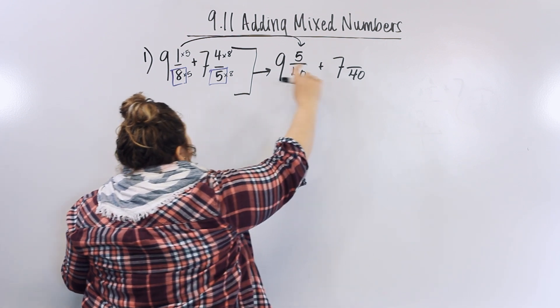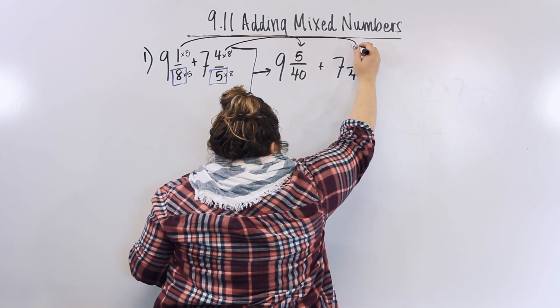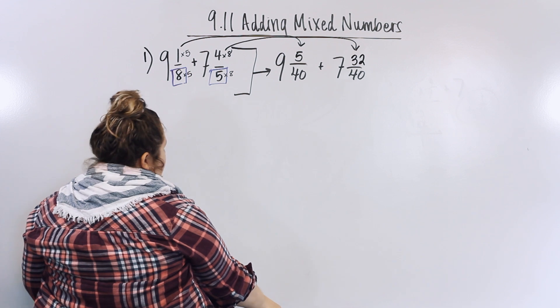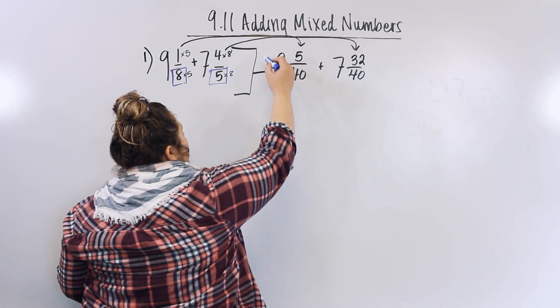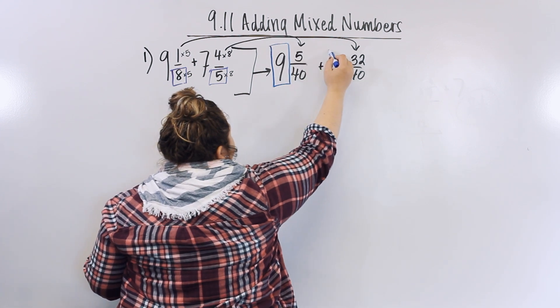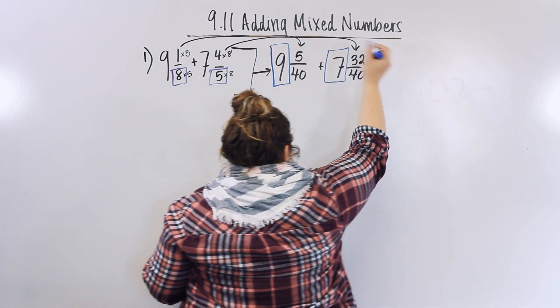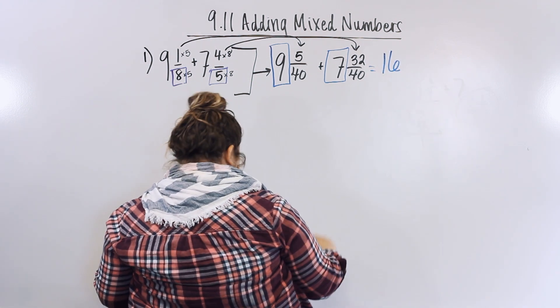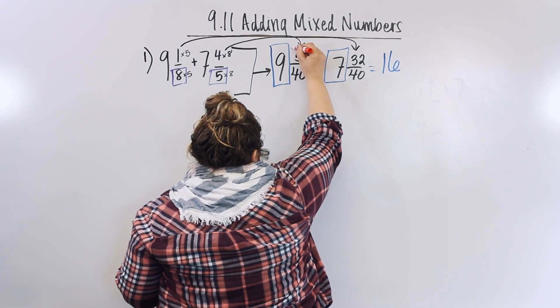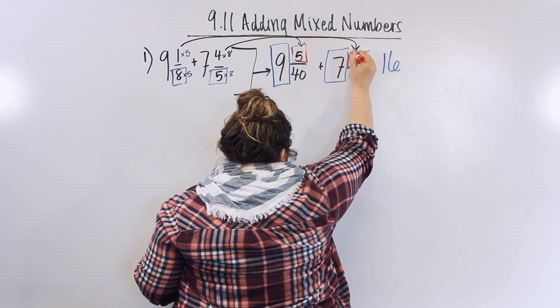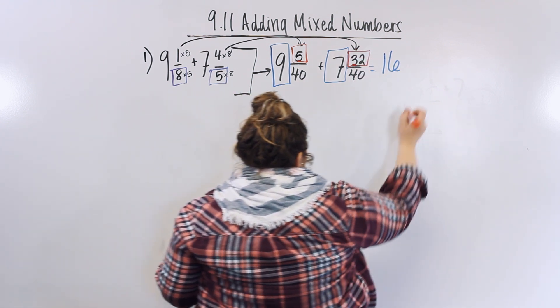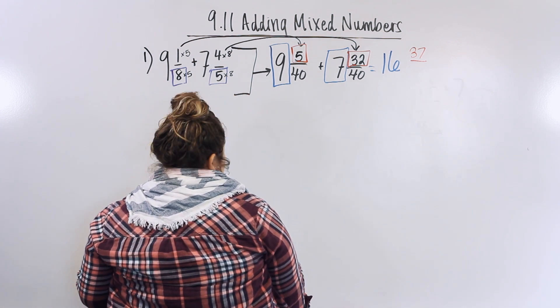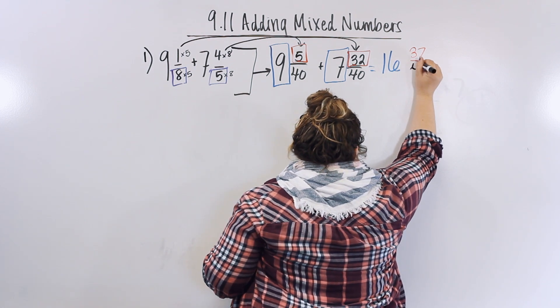Now we need to add our whole numbers together. Nine plus seven is sixteen. Then we add our numerators, which is thirty-seven, and then our denominator stays the same, and it is forty.